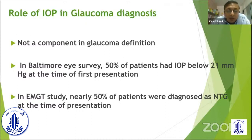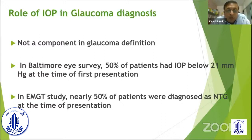If you go only by the IOP criteria for the diagnosis of glaucoma, then you are going to miss a huge number of patients in the early stage. You may pick up glaucoma in the advanced stage because then the patient will keep complaining that they can't see. But in the earlier stage, you may miss them. So we should not go by IOP only for glaucoma diagnosis.